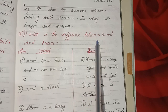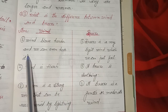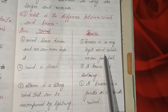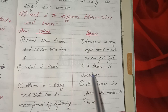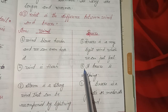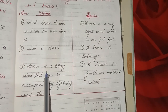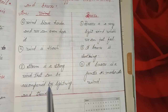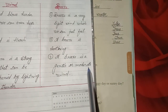Third detailed question: What is the difference between wind and breeze? Wind blows harder and we can even hear it. Breeze is a very light wind which we can just feel. Wind is harsh, while a breeze is soothing. A storm is a strong wind that can be accompanied by lightning and thunder. A breeze is a gentle or moderate wind.